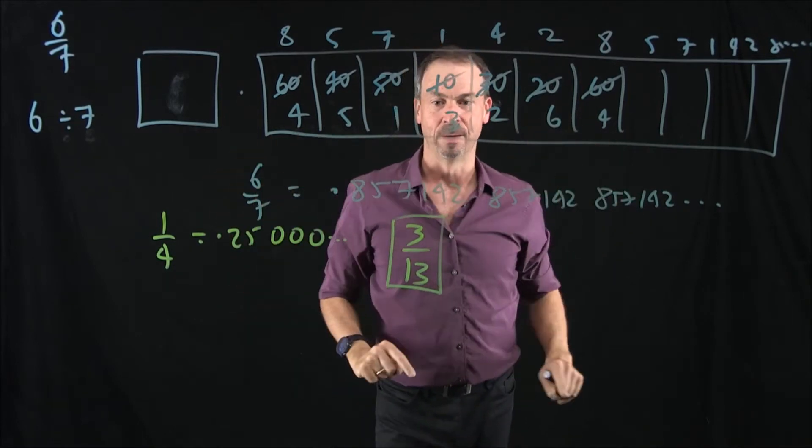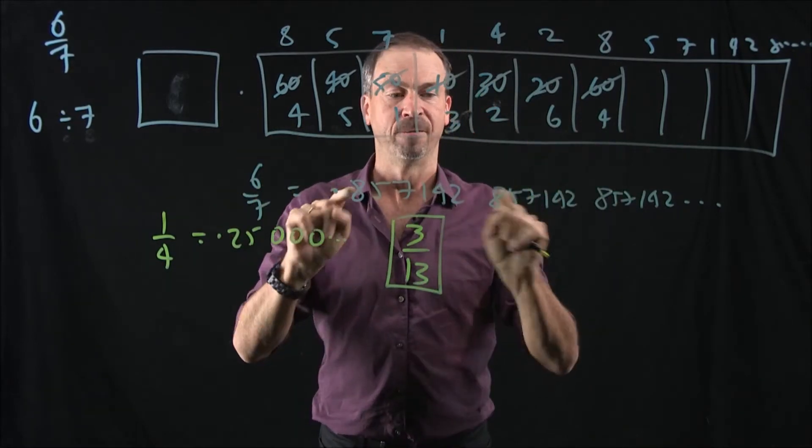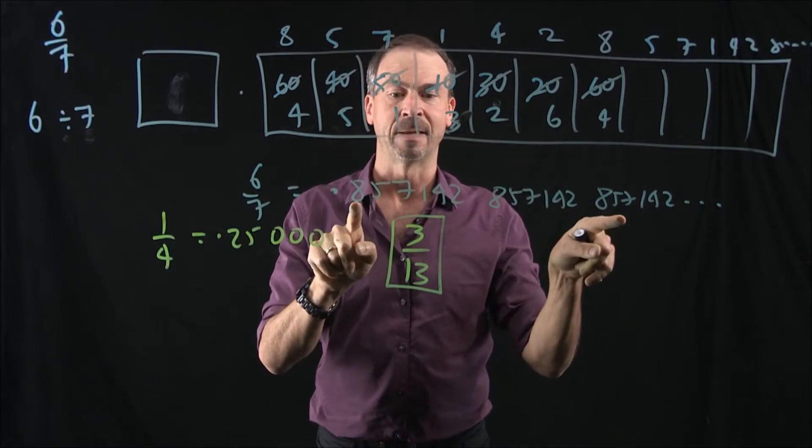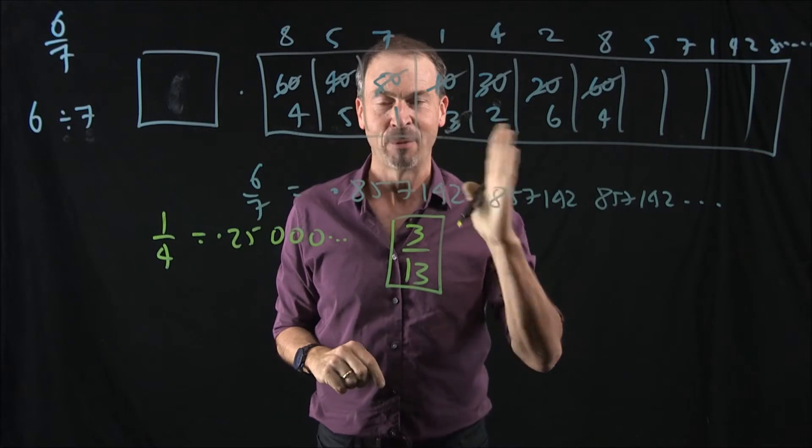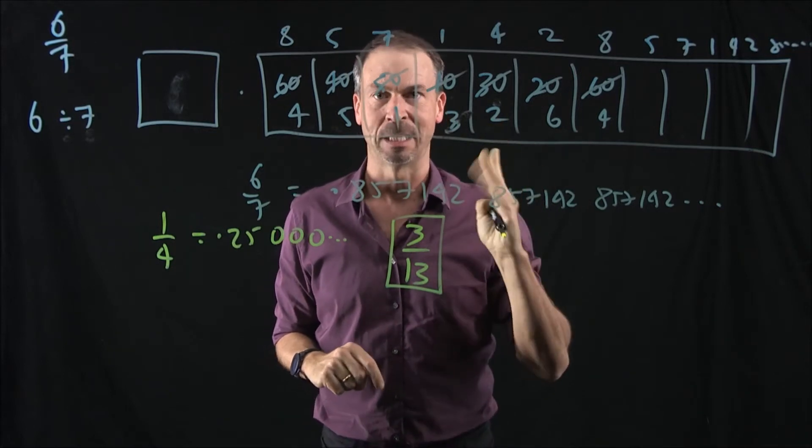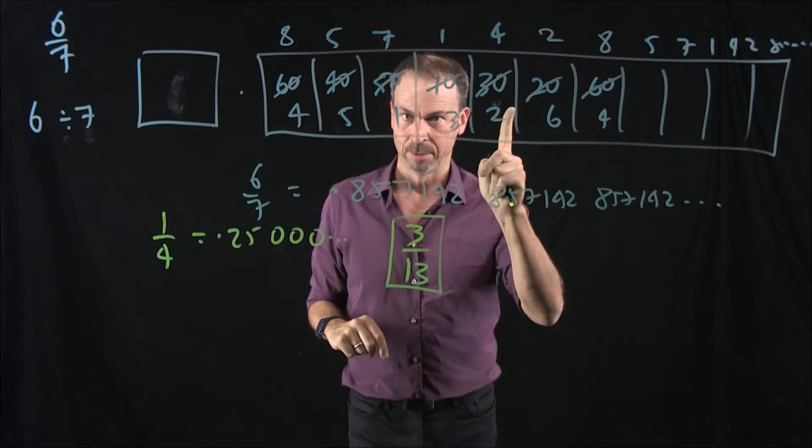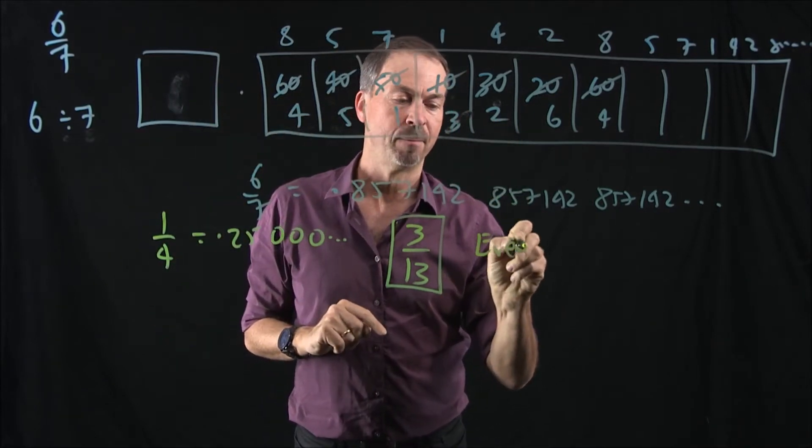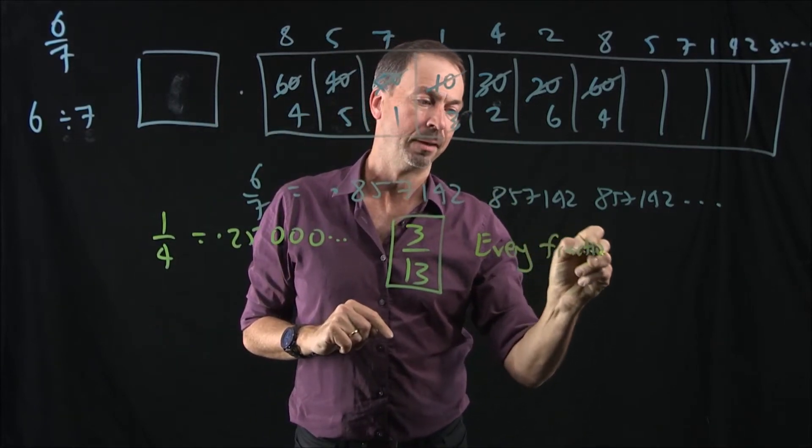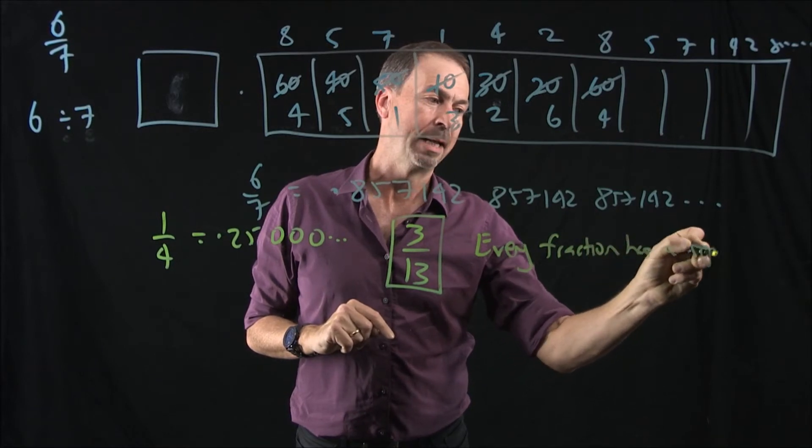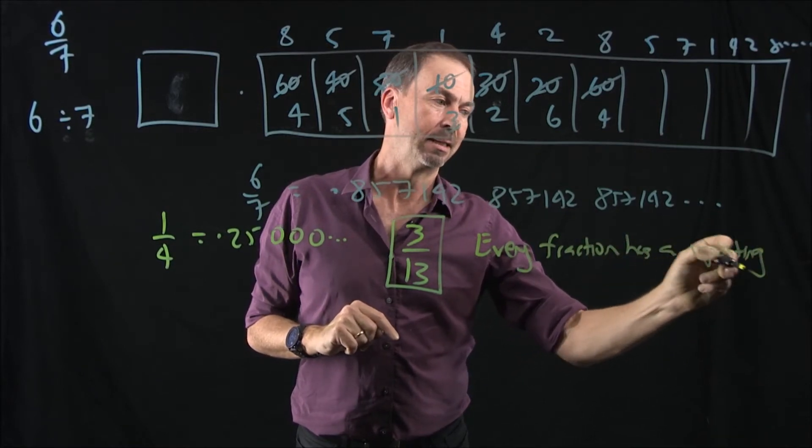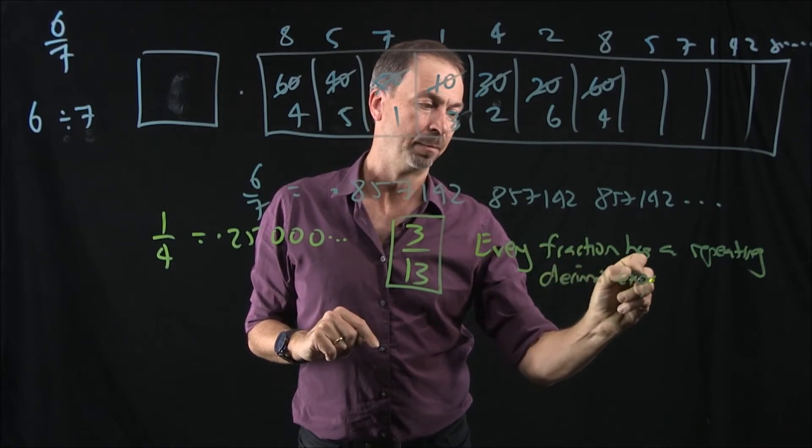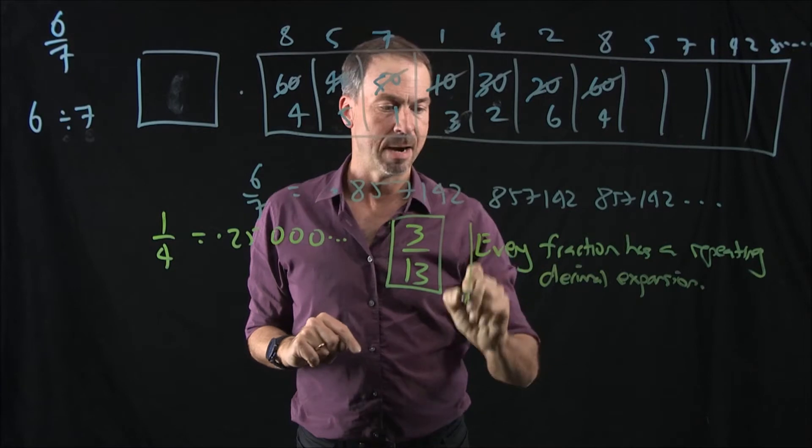We've just proven every fraction, when converted to a decimal, has a repeating pattern. It may be repeating zeros or repeating pattern like this, but every fraction has a repeating decimal expansion. Whoa, because this is deep. It's so deep, I'm going to write in words. Every fraction has a repeating, now you get to see my atrocious handwriting, a repeating decimal expansion.